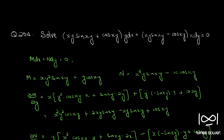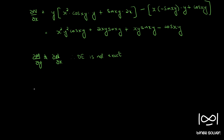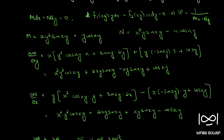In such cases we should find an integrating factor to convert it into an exact equation. If you observe, the given differential equation is in the form f₁(xy)·y dx + f₂(xy)·x dy = 0. If it is in this form and not exact, we can say the integrating factor is 1/(Mx - Ny). We will multiply throughout by 1/(Mx - Ny).